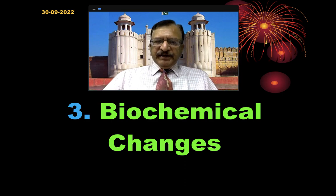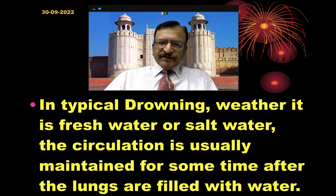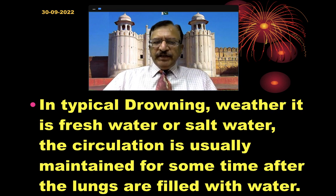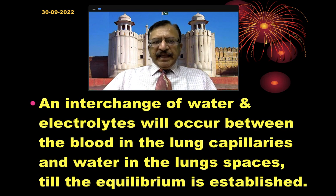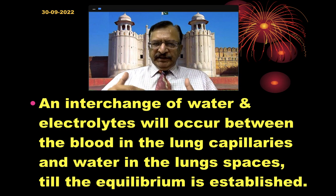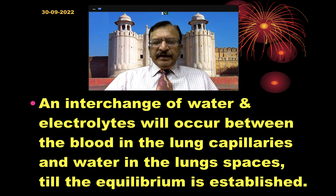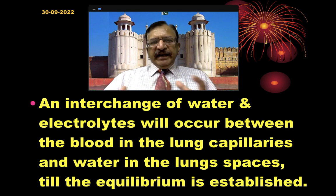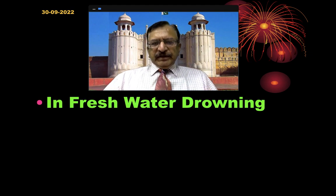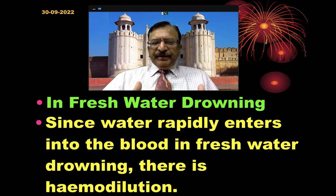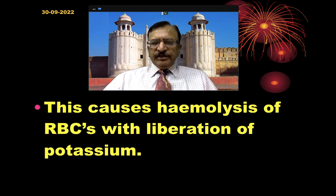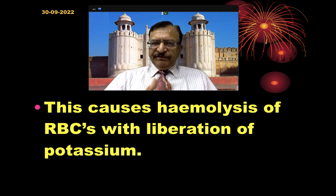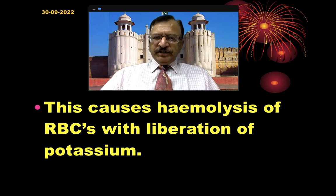Regarding the biochemical changes: in typical drowning, whether fresh water or salt water, the circulation is usually maintained for some time after the lungs are filled with water. An interchange of water and electrolytes occurs between the blood and the lung capillaries until an equilibrium is established. In fresh water drowning, water rapidly enters the blood causing hemodilution, which causes hemolysis of the RBCs with liberation of potassium. This hyperkalemia in fresh water is the cause of death, leading to ventricular fibrillation.